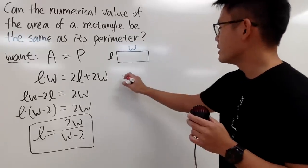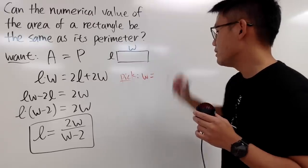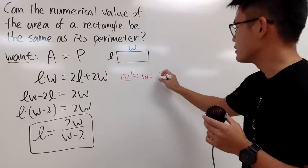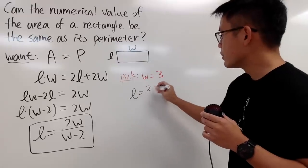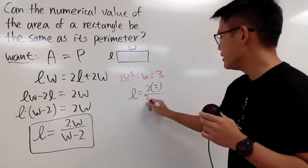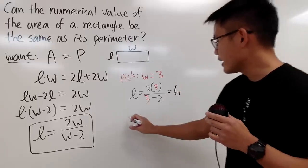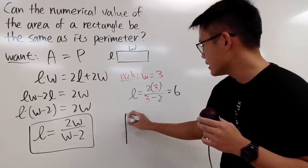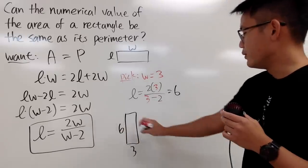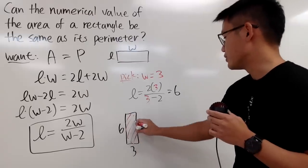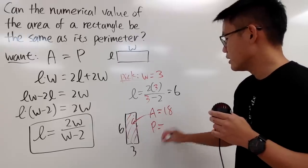You can pick w to be, if you want whole number, I can start with 3. You will see that l equals 2 times 3 over 3 minus 2, which is 6 divided by 1, which is just 6. In other words, we want the rectangle like this: 6 here and 3 here. If you look at this, the area is 3 times 6 which is 18, and the perimeter is 3, 9, 12, 18.